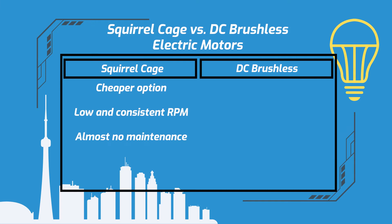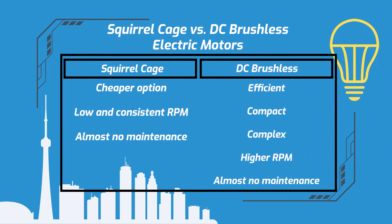Squirrel cage motors are generally cheaper than DC brushless motors, which are much more efficient and compact, but are also very complex. They also have a generally higher operational speed than synchronous motors. DC brushless motors can sometimes reach speeds of up to 100,000 RPM, whereas synchronous AC motors operate smoothly and consistently at lower speeds.